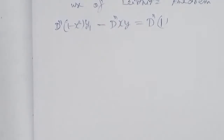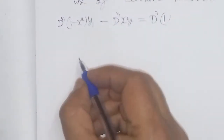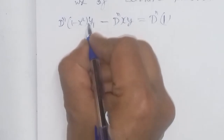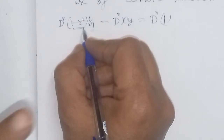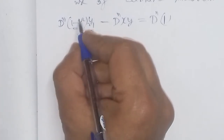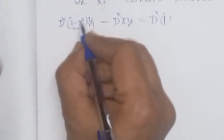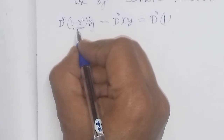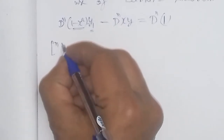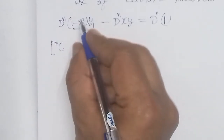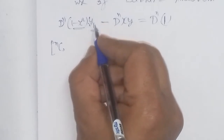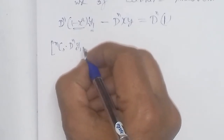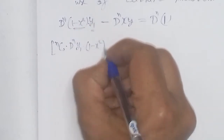We have already differentiated once, so n times differentiation remains. Now applying Leibniz theorem: when we have two functions, one is u and the other is v. In Leibniz theorem, v is chosen as the one whose differentiation becomes zero after some terms. Since y keeps increasing, it won't become zero. But (1 minus x square) becomes zero after the third differentiation, so we take it as v.